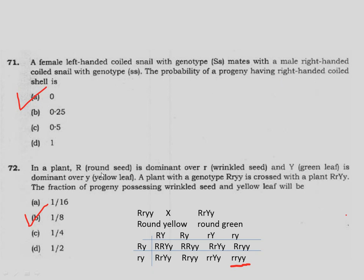Question 72: In a plant, R (round seed) is dominant over r (wrinkled seed), and Y (green leaf) is dominant over y (yellow leaf). A plant with genotype RrYy is crossed with a plant Rryy. The fraction of progeny possessing wrinkled seed and yellow leaf — both recessive features in homozygous condition — will be found in only 1 out of 8 total progeny. So the ratio is 1:8. Option B.